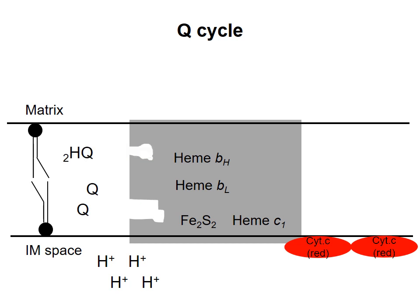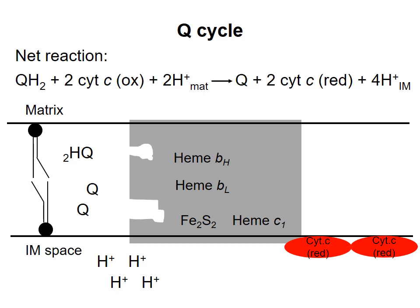So if you remember what the diagram looked like at the beginning, you'll see the two QH2s have been converted to two Qs, and one Q has been converted to a QH2. Two protons have been removed from the matrix, and four protons have been added to the intermembrane space, and two cytochrome Cs have been reduced. This will give you the net reaction shown here.